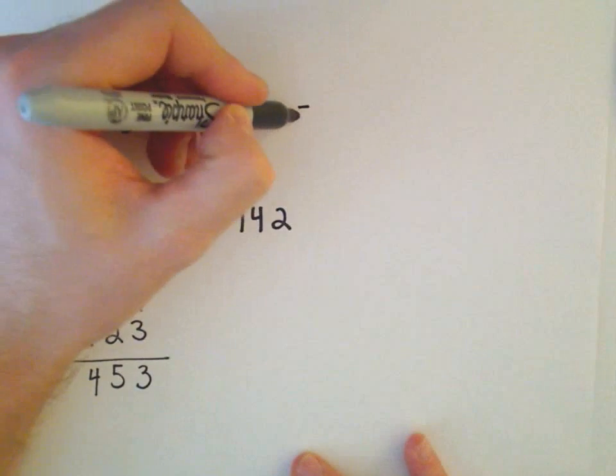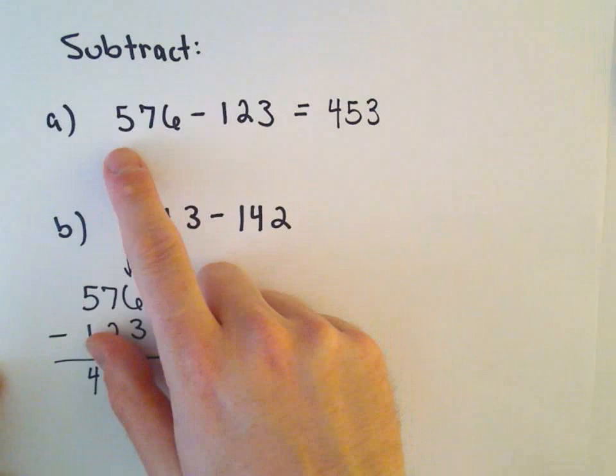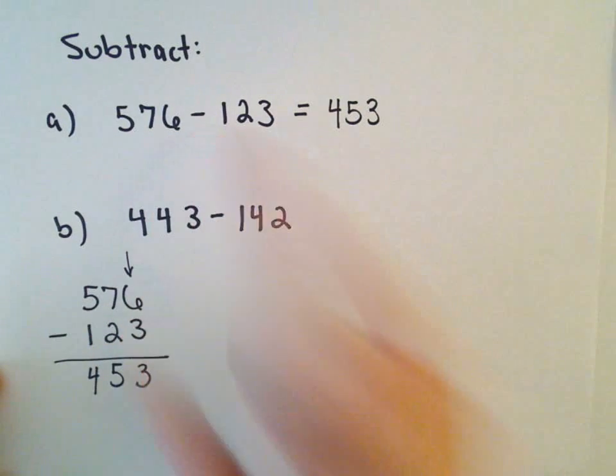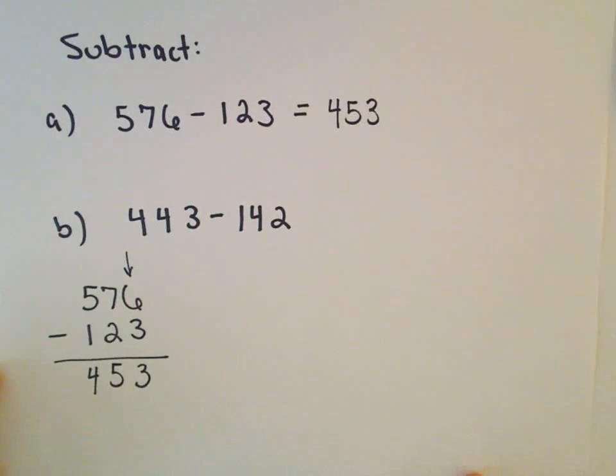So if we do our subtraction we'll be left with 453. So if you've got 576 dollars and somebody takes away 123 of your dollars, you've got 453 left.